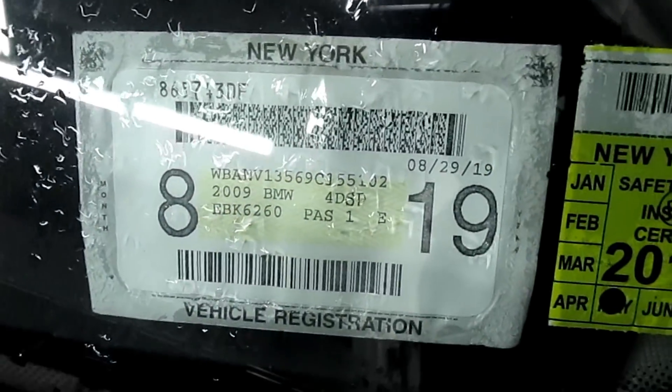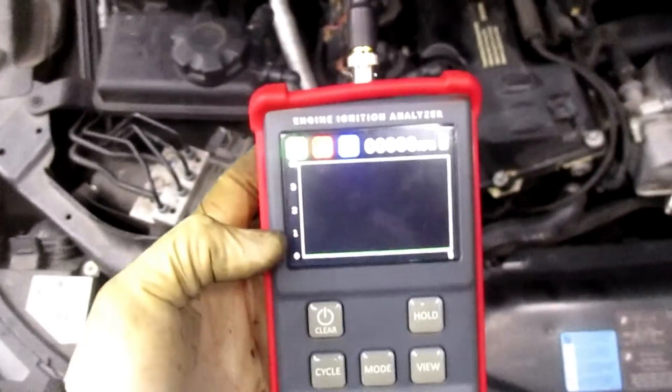We're here working on a 2009 BMW 5 Series. It has a misfire cylinder 3 code and I'm using my GTC 505. I put it in sharp mode.